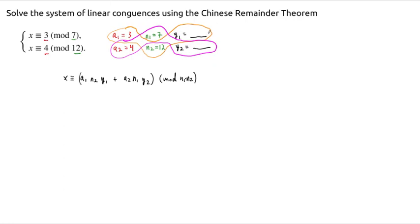We need to compute y1 and y2 before this makes any sense. We can multiply 3 times 12, but the question is what's y1, what's y2?